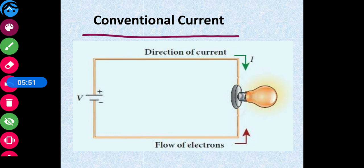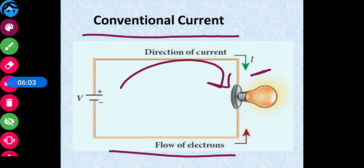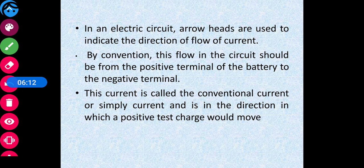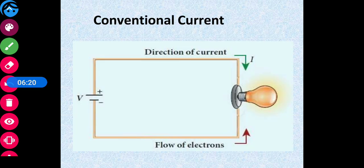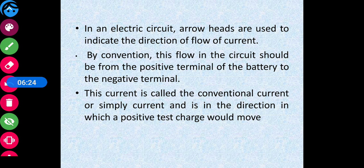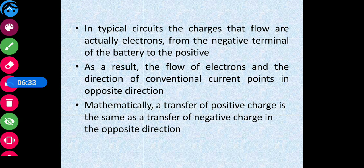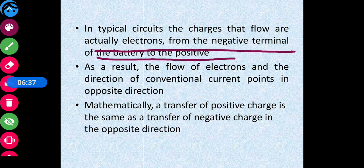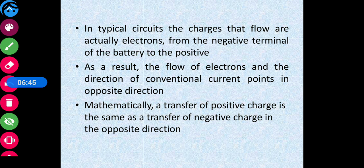Regarding the direction of current: conventionally, the direction of current is taken from positive to negative, shown by the green arrow. But actually the current is due to the flow of electrons, which flow from the negative terminal to the positive terminal. So the direction of conventional current and the direction of electronic current are opposite to each other. Mathematically, the transfer of positive charge in one direction is the same as the transfer of negative charge in the opposite direction.